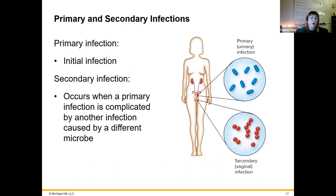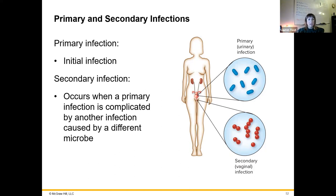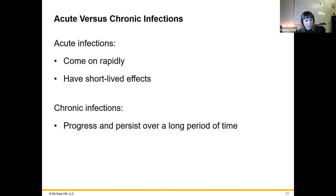Primary and secondary infections: the primary infection is the initial infection; the secondary infection occurs due to the weakened immune system caused by the first infection. For example, a primary urinary tract infection can lead to a secondary vaginal infection. Acute infections come on rapidly and are usually short-lived; chronic infections persist for a long time.